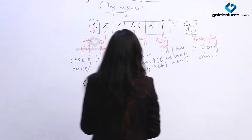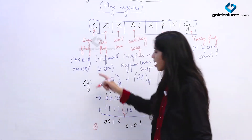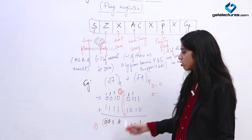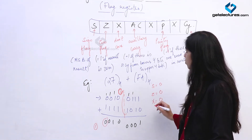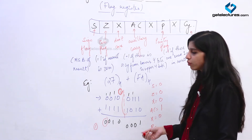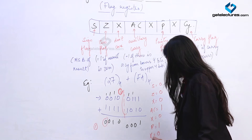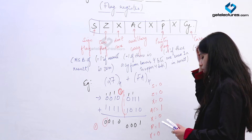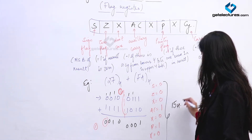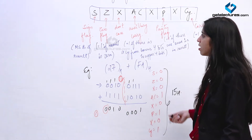Now let us look at the status of the flag register for the operation 27+FA one by one. Sign flag: MSB of the result is 0, so sign flag is 0. Zero flag: result is not 0, so this is 0. Don't care: taken as 0. Auxiliary Carry occurred: flag is 1. Don't care: 0. Parity: number of ones in result is 2, which is even parity, so parity flag is 1. Don't care: 0. Carry occurred: flag is 1. Reading the flag register in hexadecimal, the value of the PSW is 15H.